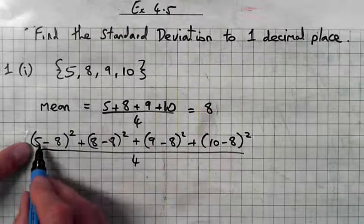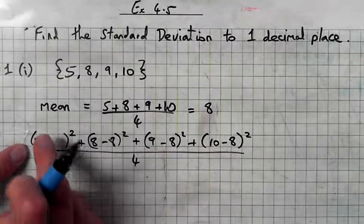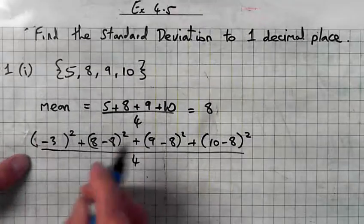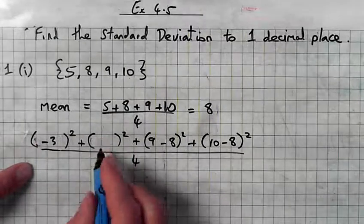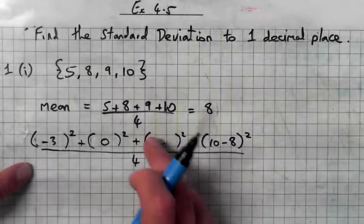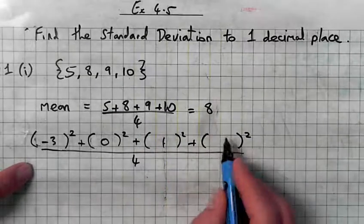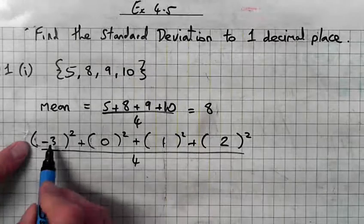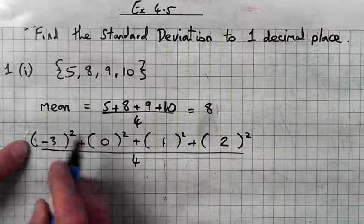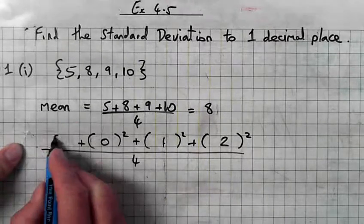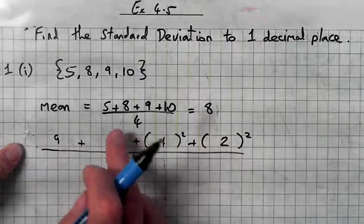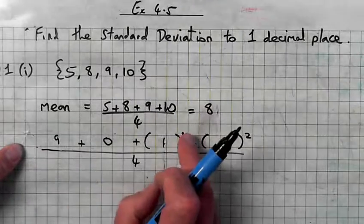So 5 minus 8 is negative 3, 8 minus 8 is 0, 9 minus 8 is 1, 10 minus 8 is 2. Negative 3 squared, negative 3 times negative 3 is 9, 0 squared is 0, 1 squared is 1.